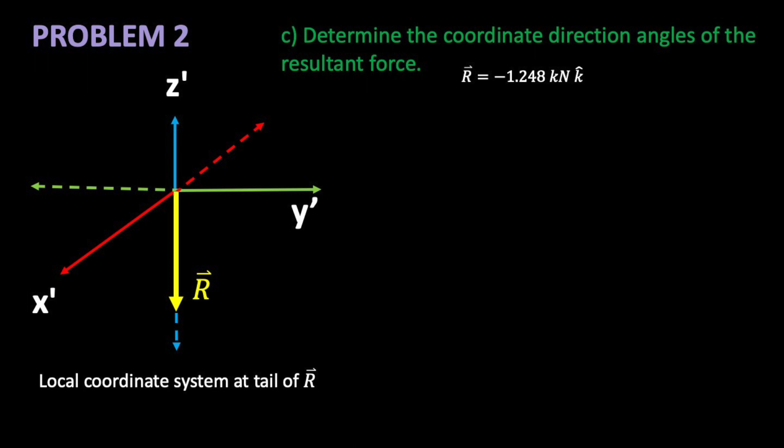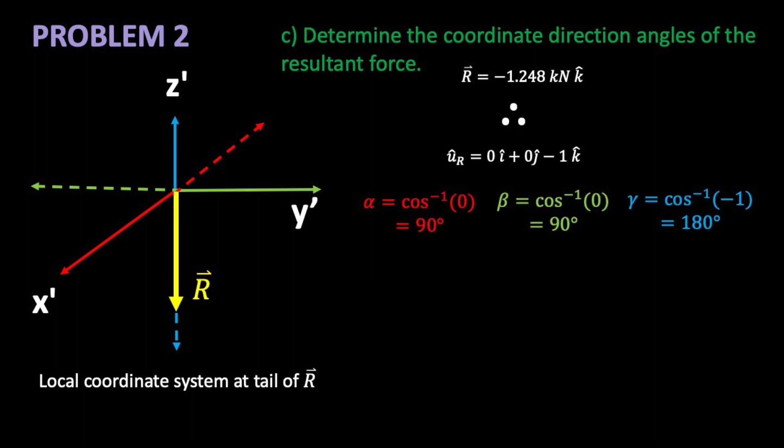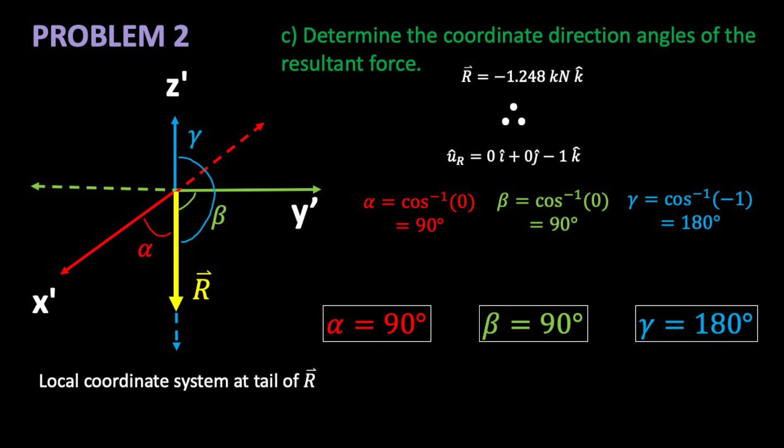Last part. Find the coordinate direction angles. We can do this the long way or the short way. The long way is to use our unit vector and actually calculate the arc cosines. The short way is to visualize our three angles. No number crunching needed. Congrats on slaying another problem.